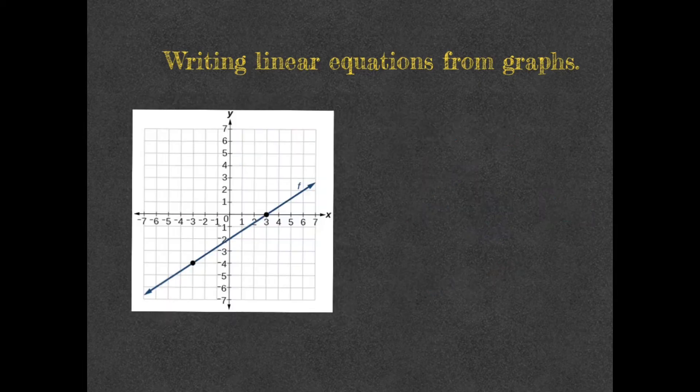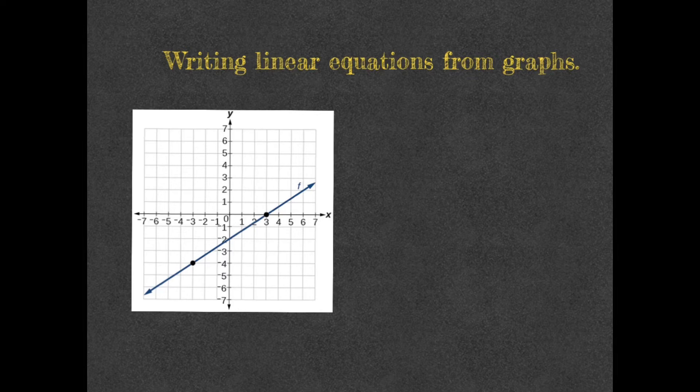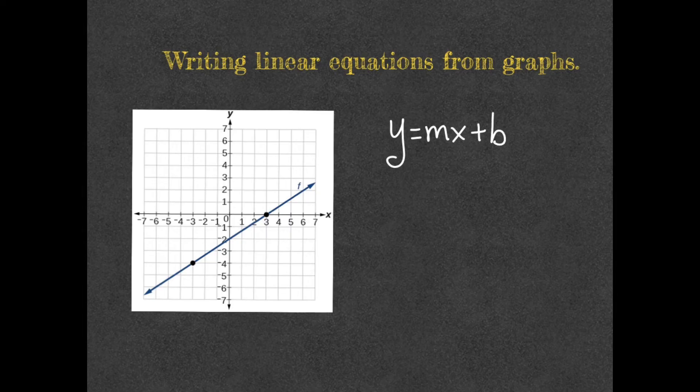Okay, let's work on another example right here. I have another line, this one right here. And one more time, we are going to use y equals mx plus b. One more time, we're going to start with b, which is wherever the line, this line right here, crosses the y axis. So that'll be right here. In this case, b equals negative 2, because the line is touching the y axis right here at negative 2.